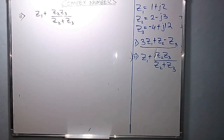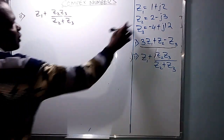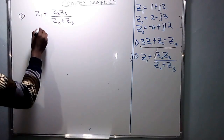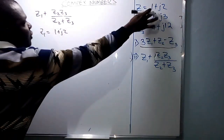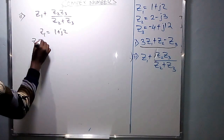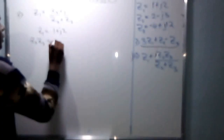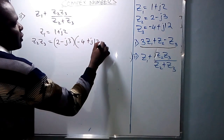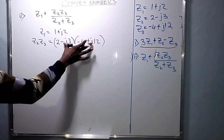We handle each term independently. Z1 is just a single term, so that is fine. The second term in the numerator is Z2·Z3, so we multiply Z2 times Z3 by substituting their values. The value of Z2 is 2 minus j3, and the value of Z3 is negative 4 plus j12.